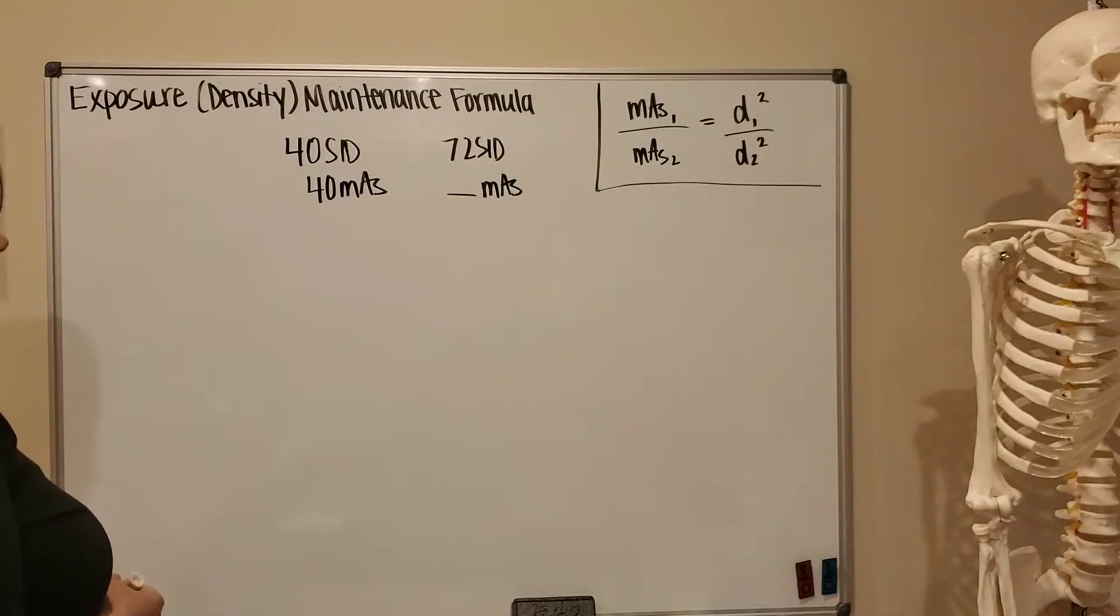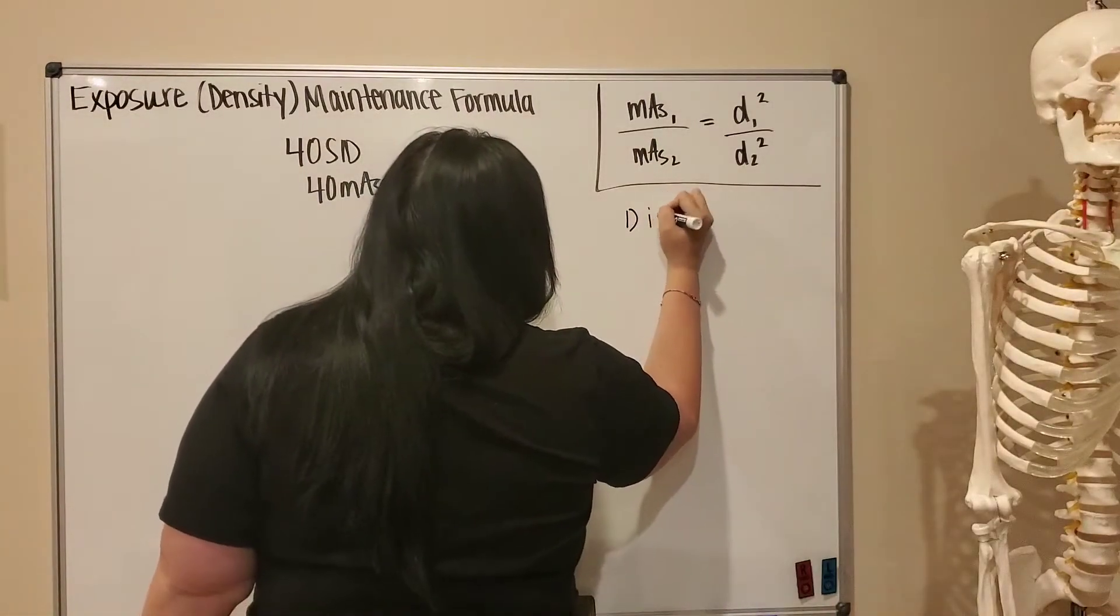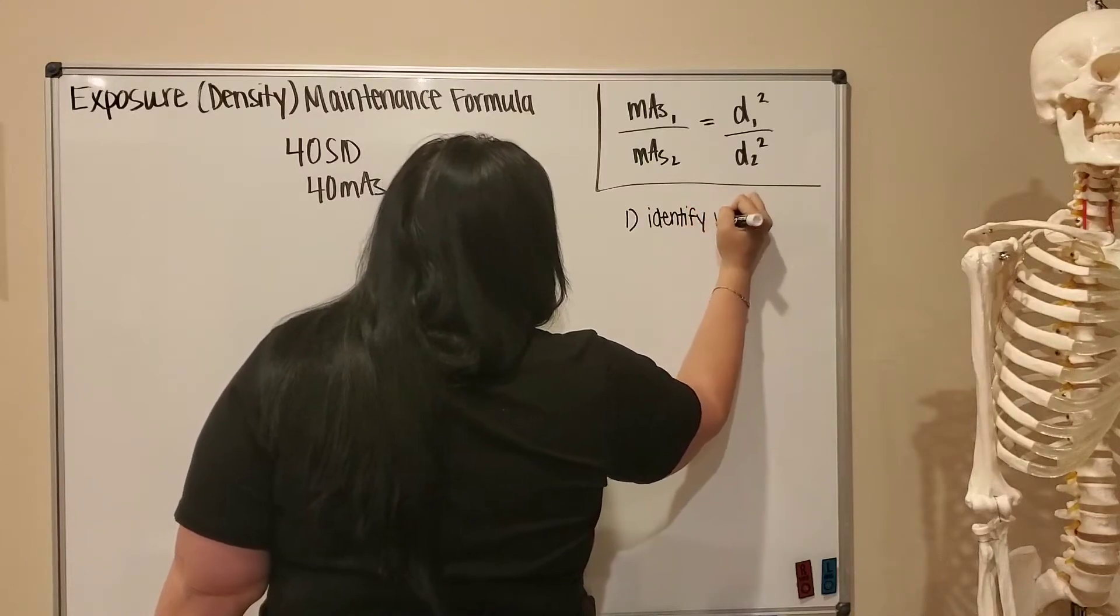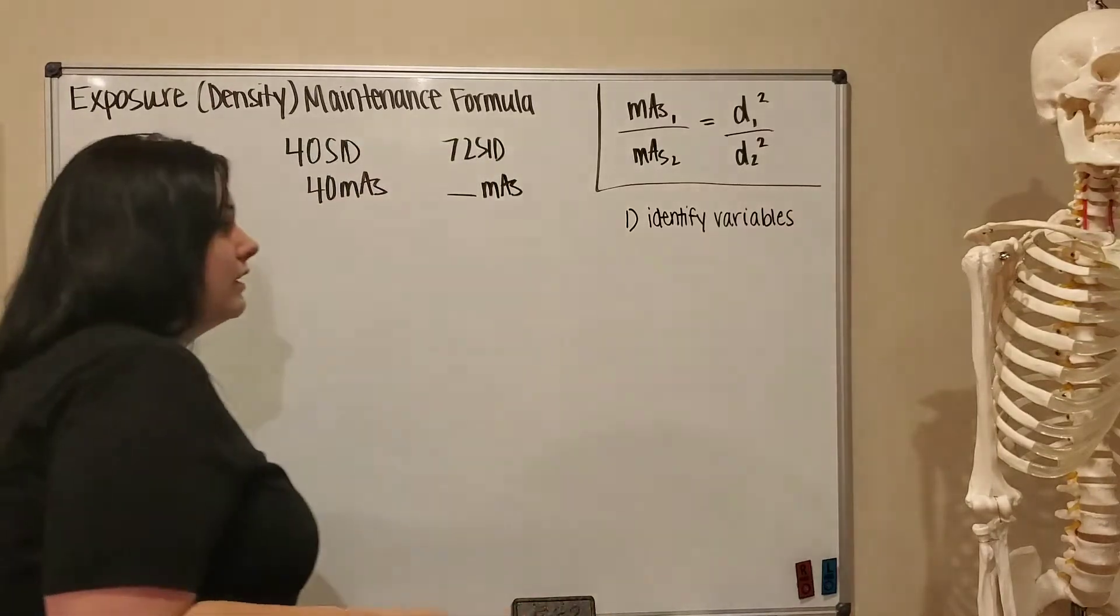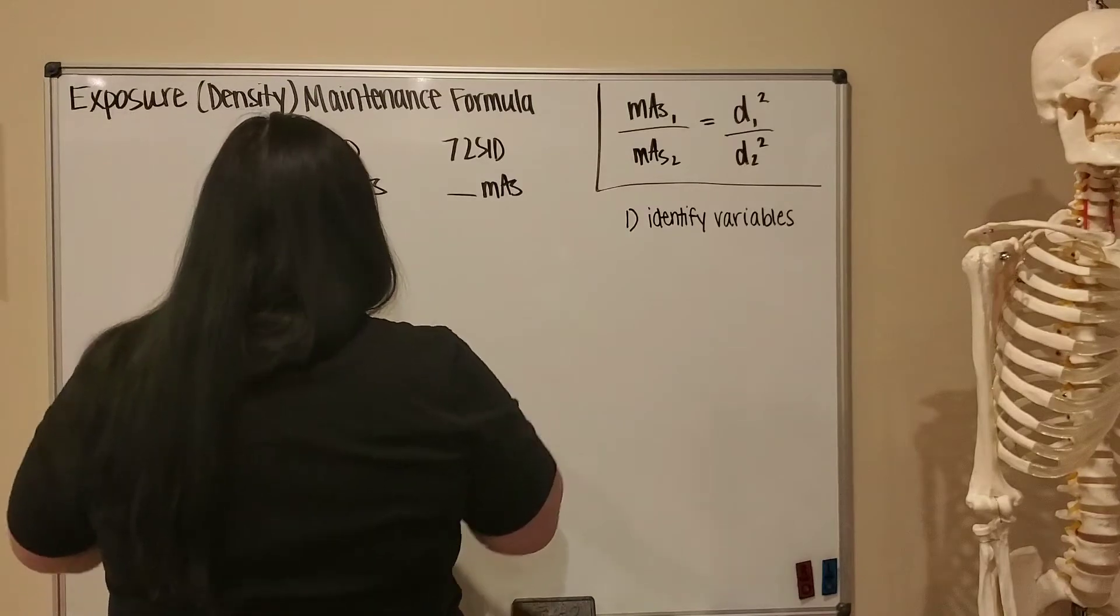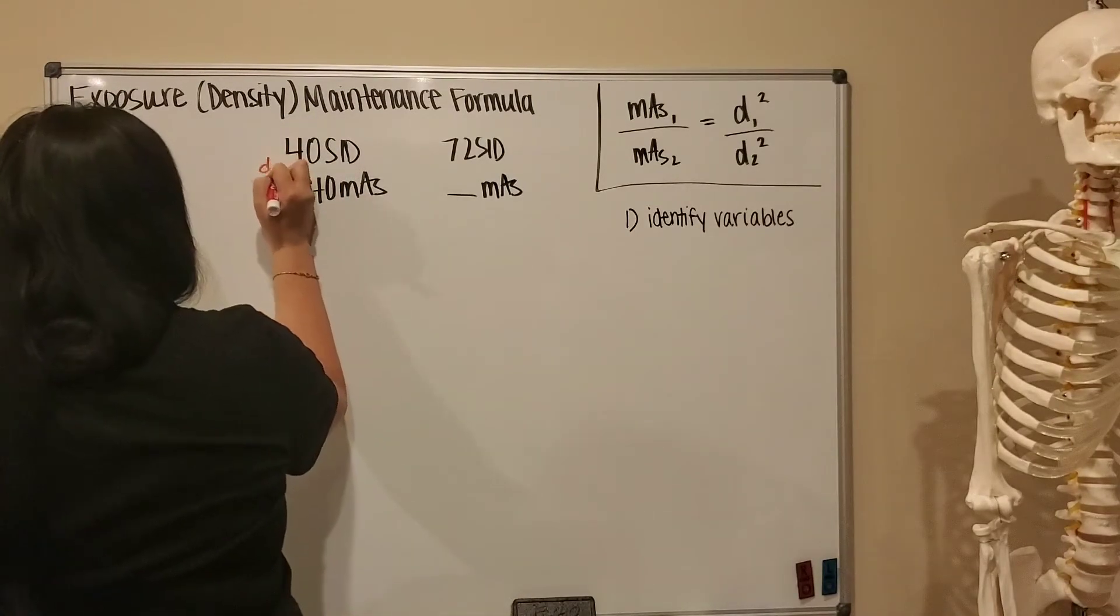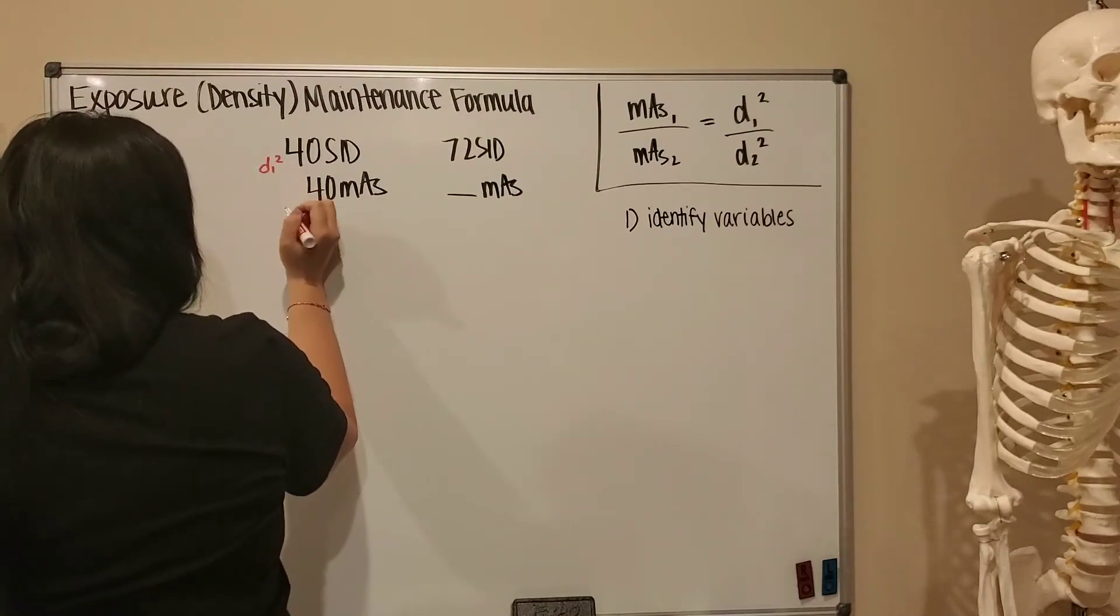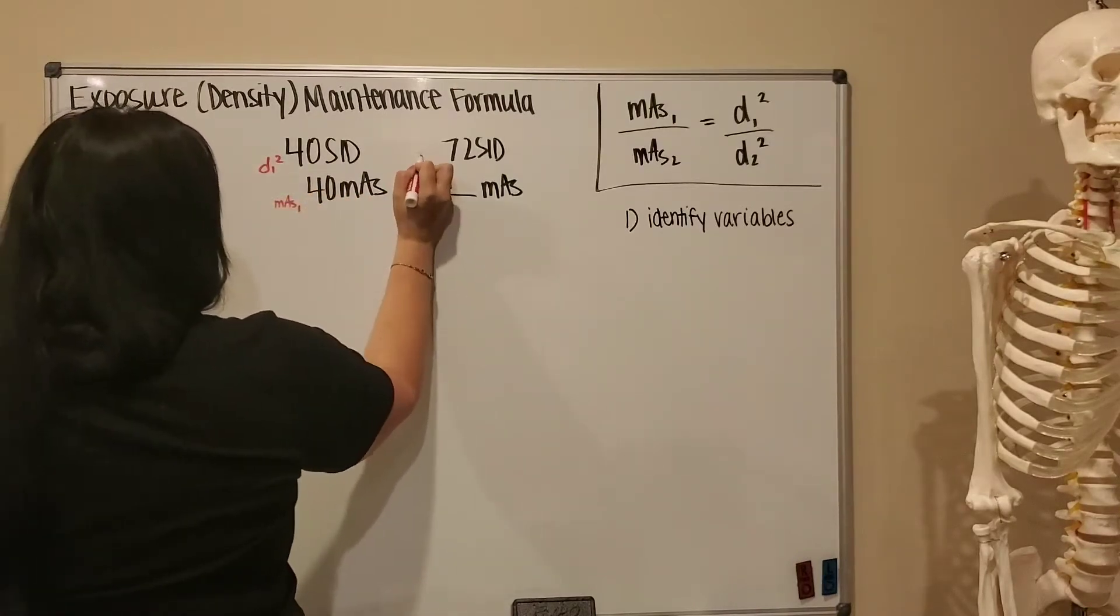So the first thing that you want to do is identify your variables for the formula. Okay, so step one: identify variables. If you already watched the inverse square law video, these steps are going to be quite similar. In this scenario, our distance 1 squared is our 40 inch SID, our mAs 1 is here, our distance 2 squared is 72, and we're solving for mAs 2.